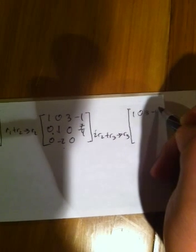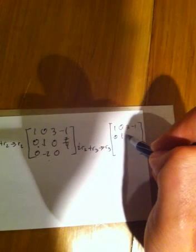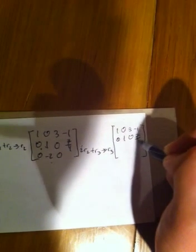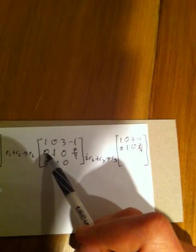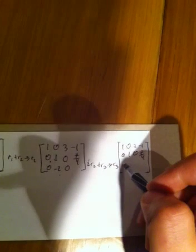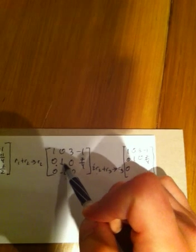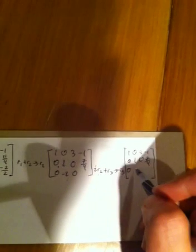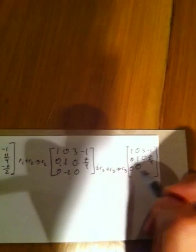1, 0, 3, negative 1. 0, 1, 0, 7 over 4. Now two row 2s: 2 times 0 is 0 plus 0 is 0. It's two row 2s plus row 3 to make a new row 3, so 2 times 1 is 2 plus negative 2 is 0. 2 times 0 is 0 plus 0 is 0.